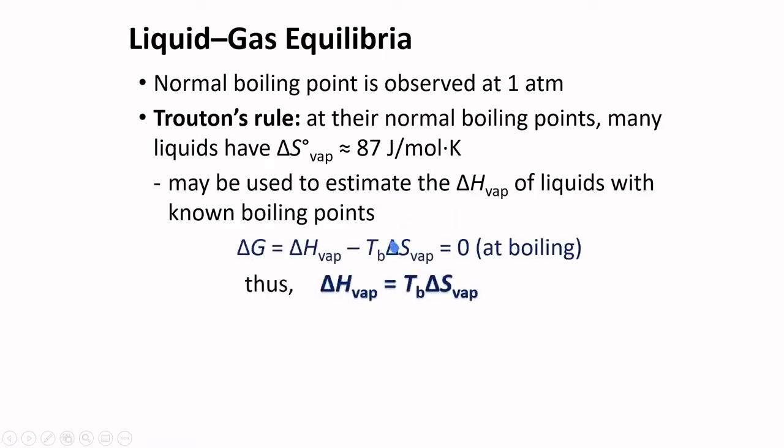As you know, boiling of substances is an equilibrium condition, and so delta G, the change in Gibbs free energy, is equal to zero. Hence, we can rearrange this formula into this one. If delta S of vaporization is equal to 87 joules per mole per kelvin, and the boiling temperature is known, then we can have an estimate of the heat of vaporization.